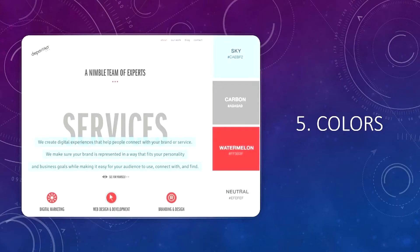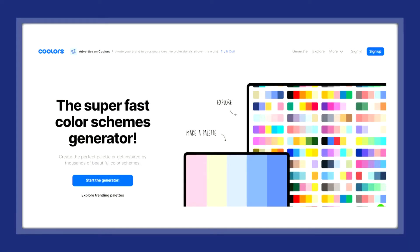Number five: colors. Your color palette should complement your logo or business type. Colors can either make or break your design, and color can be a key factor in how a visitor perceives your brand — it can impact how long they stay on your website and whether they buy from you. It's generally accepted you should use four to five colors that complement each other. There's a website called Coolors — C-O-O-L-O-R-S — with a color scheme generator that can help you out; I'll leave a link in the description.